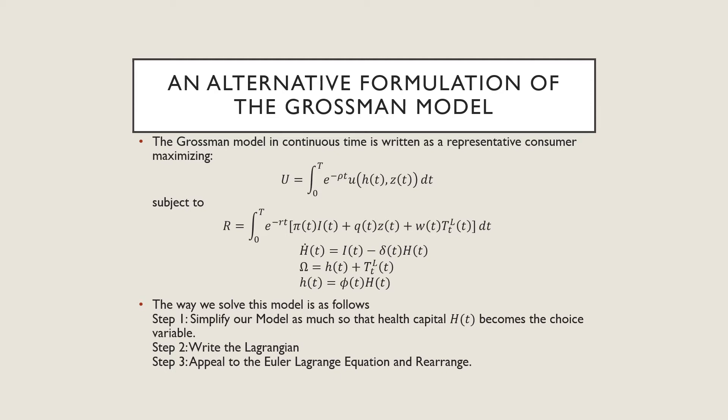He can allocate that according to investment, according to consumption of other goods, and there's also a price he has to pay for time he is sick. We also have our usual law of motion of health, this time with reference to a continuous time version. We have our time constraint here where we abstract from the other terms and just have health time and time lost.